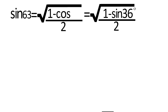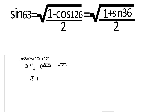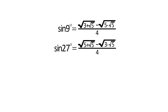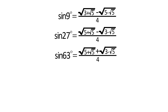Now, sin 63° = √((1 + cos 54°) / 2), since cos 54° = sin 36°. We found the value of sin 36° in our previous video — check the description box below. So sin 63° = (1/4)√(5 + √5) + √(3 − √5), which is equal to cos 27°.